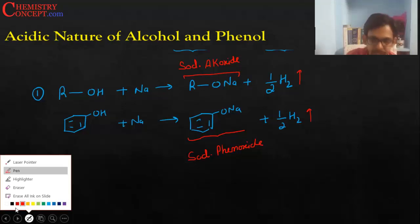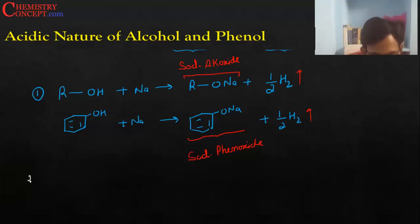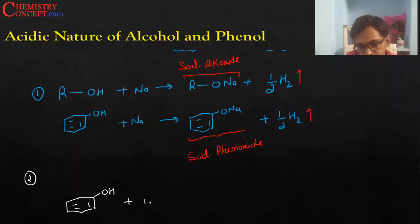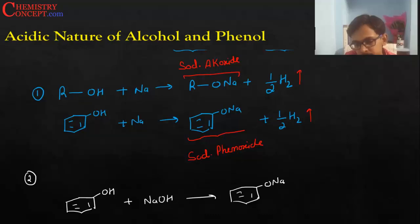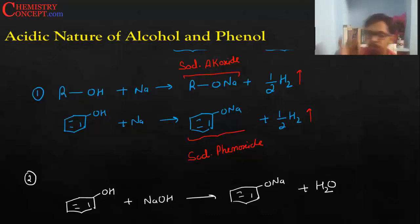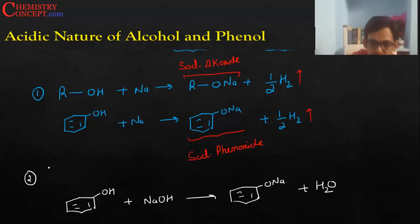So because both alcohols as well as phenol react with sodium to produce hydrogen gas, this indicates that both of them have a little bit of acidic character. Phenol also shows another acidic reaction: phenol reacts with NaOH to form sodium phenoxide plus water.